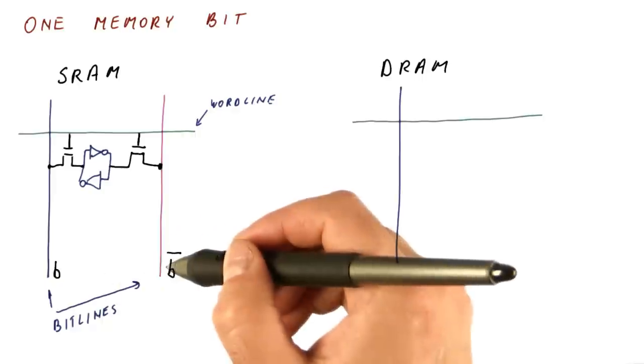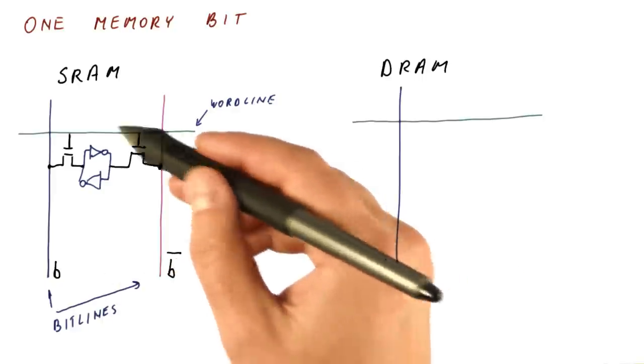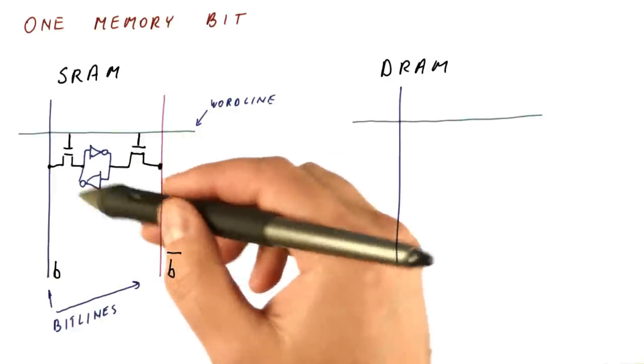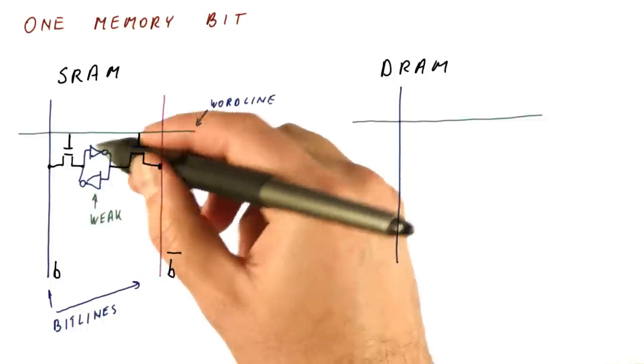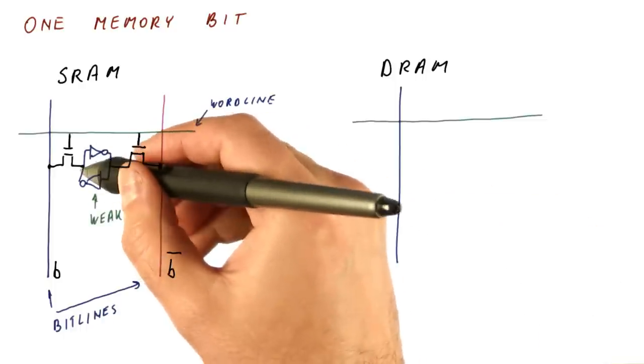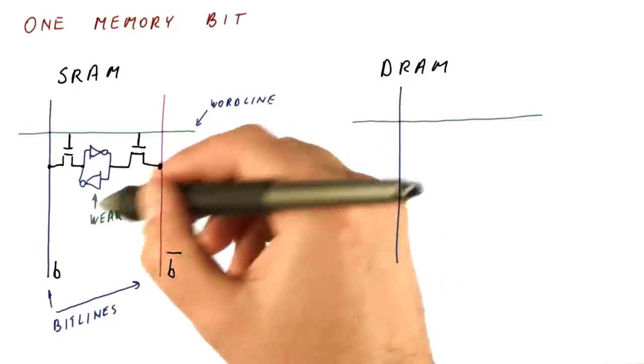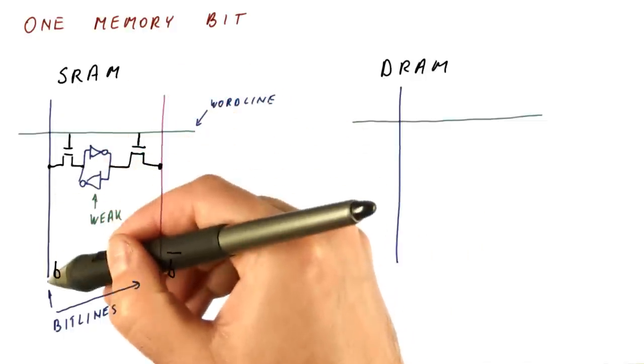By looking at the difference between these bit lines, we can more quickly detect what the cell actually has. As we said, these are weak transistors here. So once we connect this cell to the bit lines, the bit line is long.